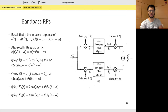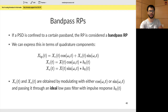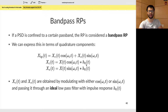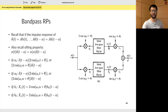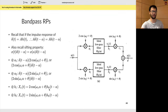At b1, this is xc(t): take the input, multiply by cosine, and apply a low-pass filter. The deltas change to h₀ because that's the impulse response of the LPF. So at b1 you have 2cos(ωcα + θ) · h₀(t−α). Similarly at b2, with sine: 2sin(ωcα + θ) · h₀(t−α). Both are scaled by the LPF shifted by alpha.